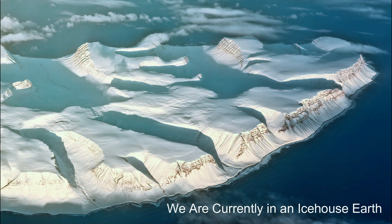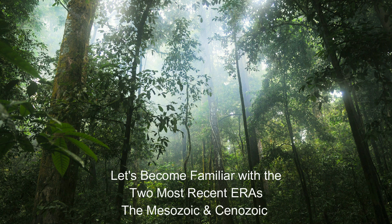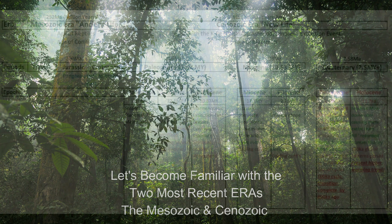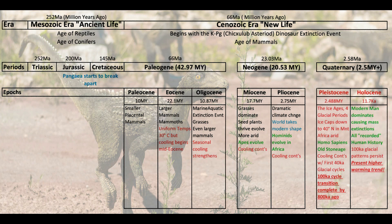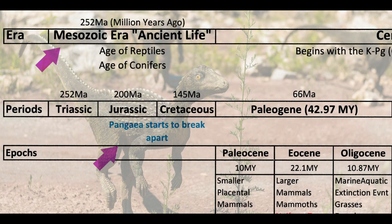We are currently in an icehouse Earth. Let's become familiar with the two most recent eras: the Mesozoic and Cenozoic. The Mesozoic era began 252 million years ago and lasted 186 million years. This was the age of the reptiles and the age of the conifers. There were three periods — the Triassic, Jurassic, and Cretaceous — and many epochs. The land masses were all together in one continent called Pangaea, which started to break up as tectonic plates moved to where the continents are today.